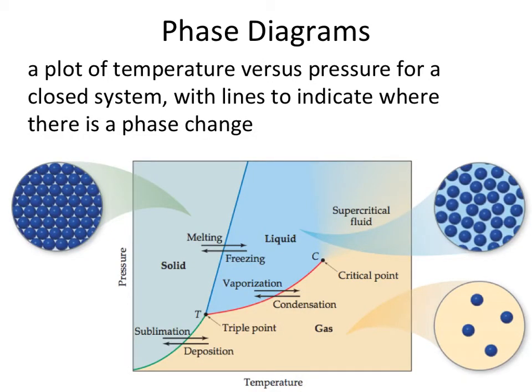Phase diagrams interrelate the states of matter with both temperature and pressure. If we look at our example below of our phase diagram, we have multiple components.